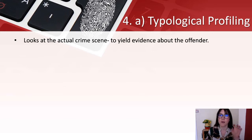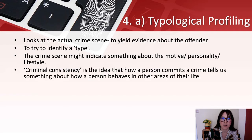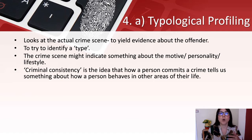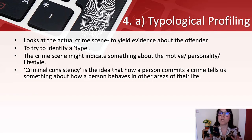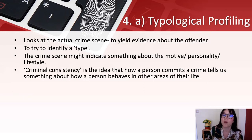Typological profiling looks at the actual crime scene itself to yield evidence about the offender. The crime scene might indicate something about the motive, personality and lifestyle. Criminal consistency is the idea that how a person commits a crime tells us something about how they behave in other areas of their life. For example, you can tell if the crime was unplanned and off the cuff, or whether it was planned and organised — leading to whether it's manslaughter or first-degree murder.